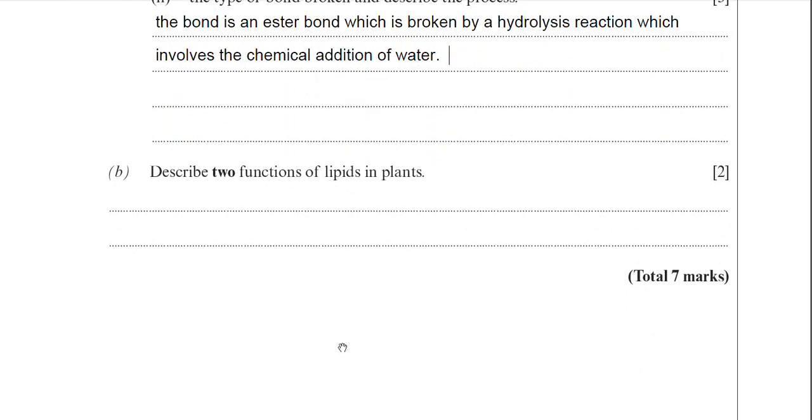Lastly then for two marks, describe two functions of lipids in plants. Don't fall into the trap of writing things like thermal insulation or electrical insulation. Plants don't use lipids for that function. They don't have nerve cells, so they won't have a myelin sheath. And therefore they don't need electrical insulation.